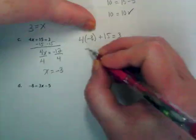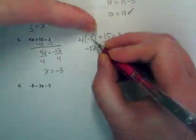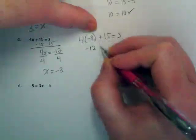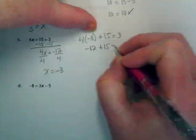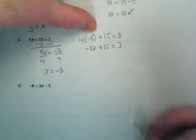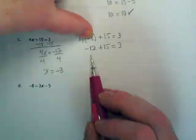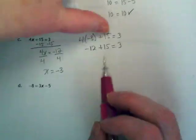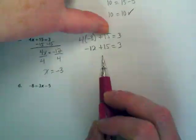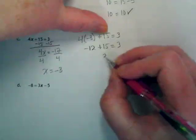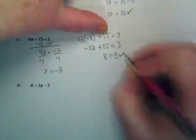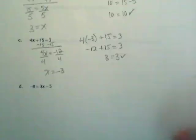We get negative 12 because 4 times negative 3 is negative 12, plus 15. The question is, is that equal to 3? If I start at negative 12 on the number line and I move to the right 15 places, I'm going to end up at positive 3. So this is 3 equals 3 and it checks. Bless you.